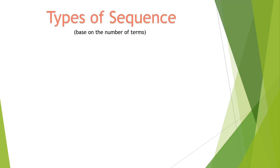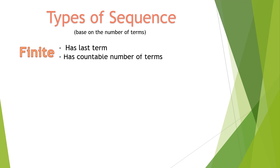The first classification is types of sequence based on the number of terms. The first one is known as the finite sequence. A finite sequence has a last term and it has a countable number of terms. For example: 2, 3, 4, 5. This is a finite sequence. The last term is 5, and it has 4 terms in all.